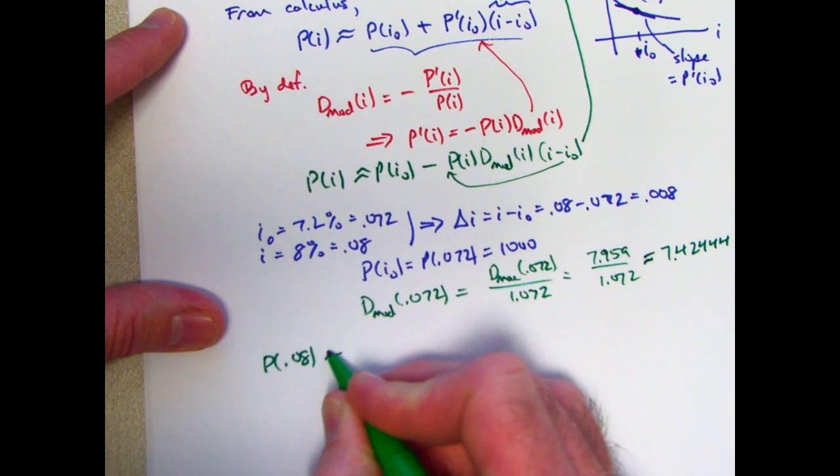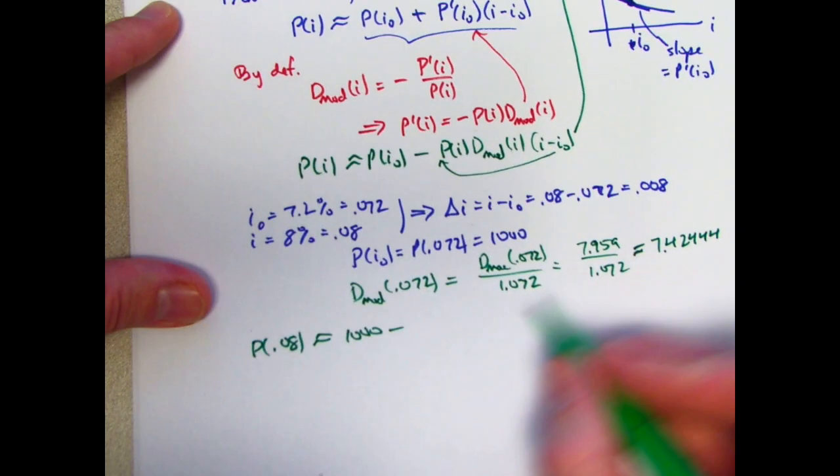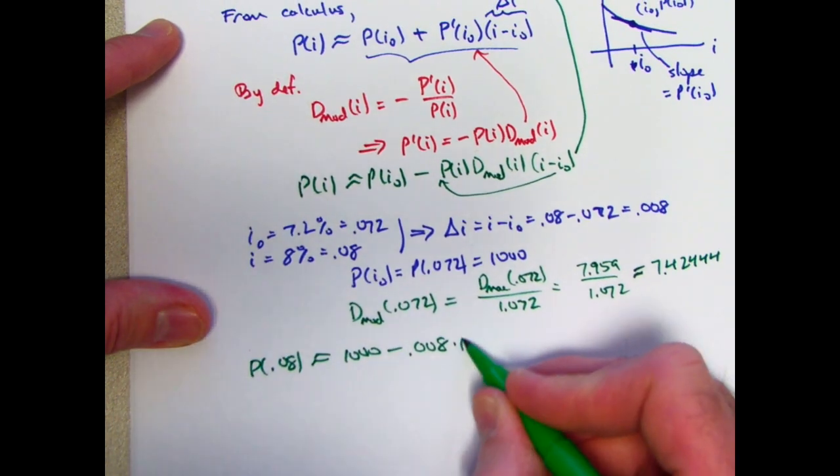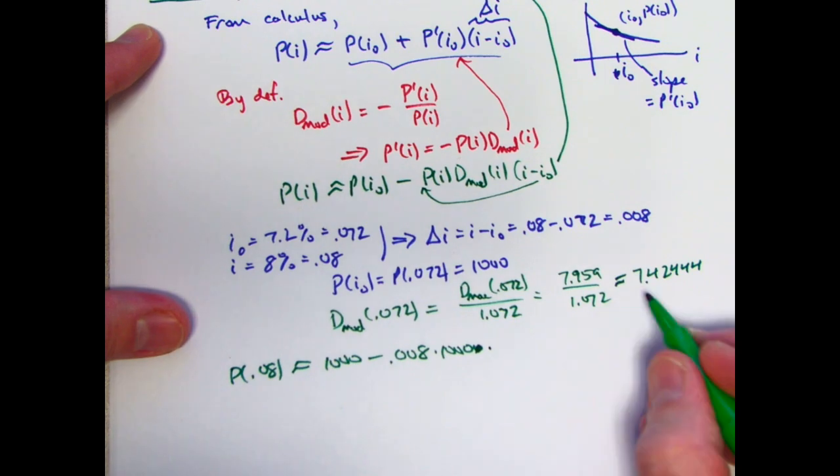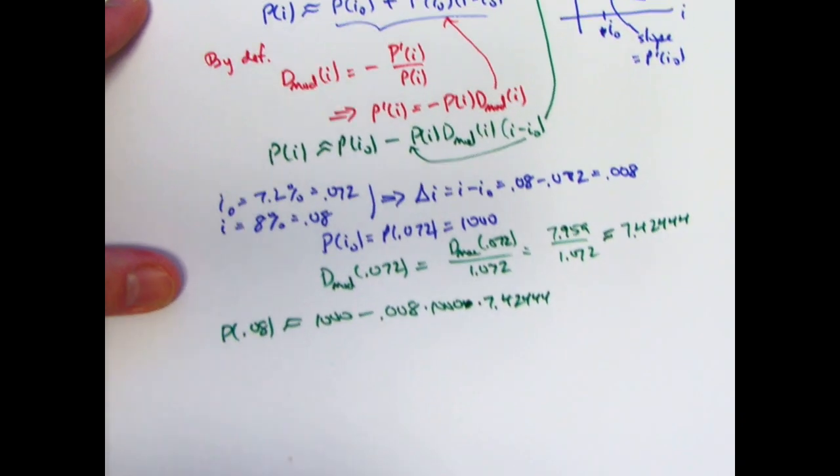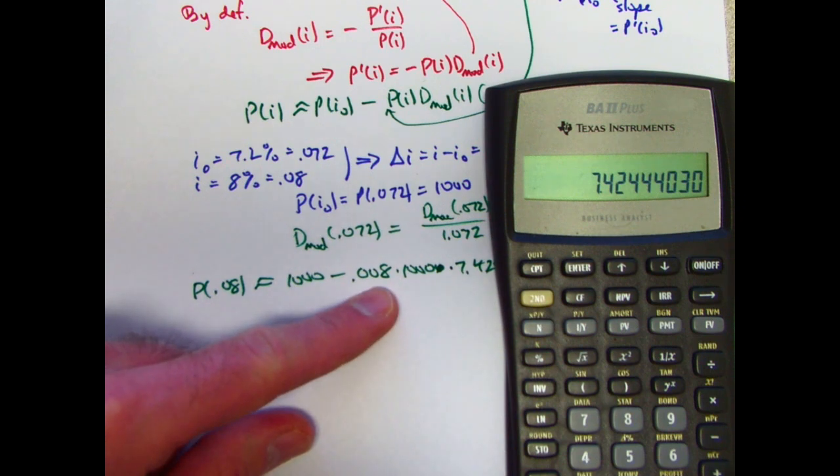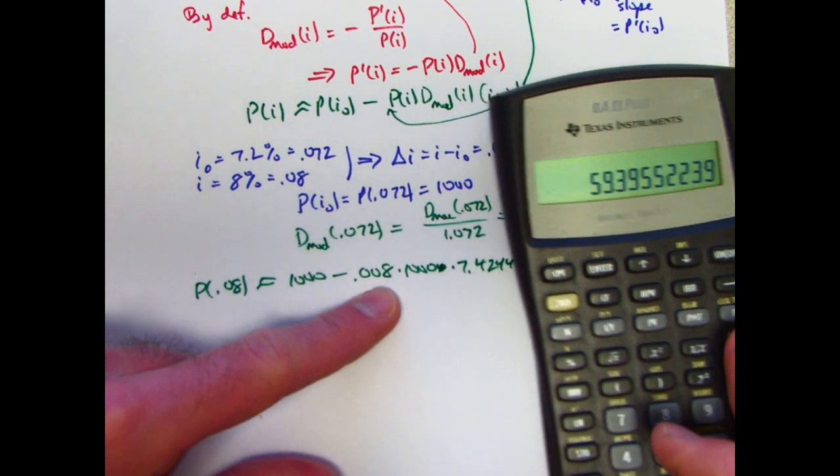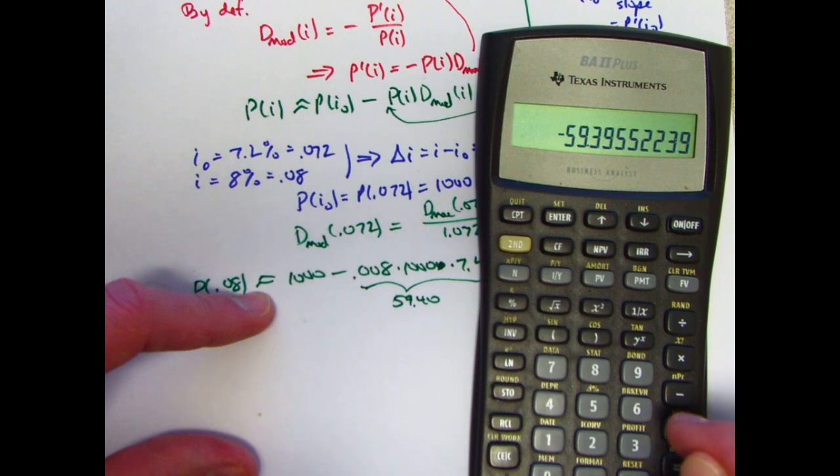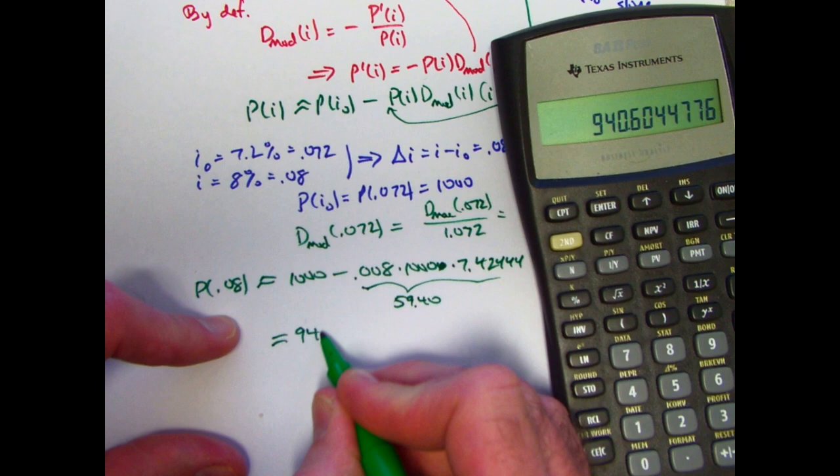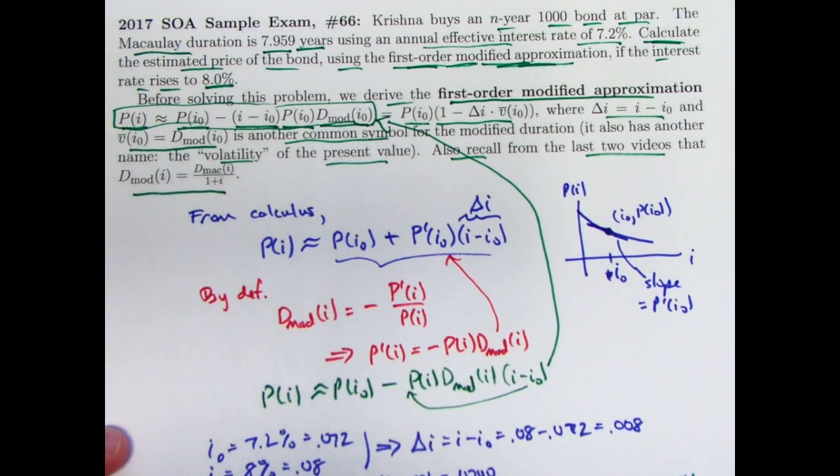So let's go ahead and now we're ready to finish with this approximation here. So p(0.08) is approximately p(0.072), which is 1,000, minus i minus i0 is 0.008 times p(i0), which is 1,000. I could have factored the 1,000 out. I could have written it like this, but I didn't, times, finally, the modified duration, 7.42444, and just do this calculation now. So I'll multiply this times 1,000 times 0.008, that will be times 8. This times 8, 59.39, approximately 59.40, take that away from 1,000. You get a price of approximately 940.60. That is the correct answer. That is choice A from this sample exam from 2017, number 66.